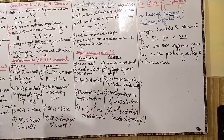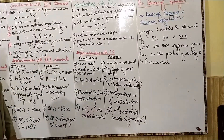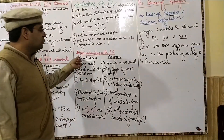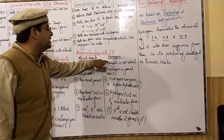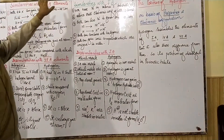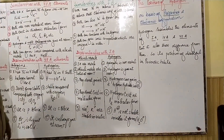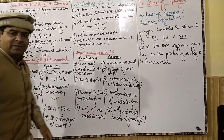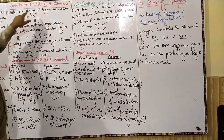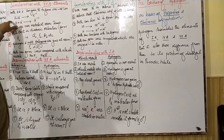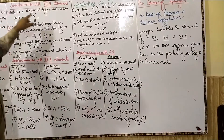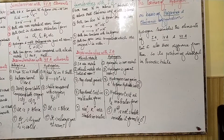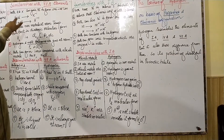Now we come to some similarities of hydrogen with Group 7A (halogens). The dissimilarities of hydrogen from 1A are almost the similarities with 7A. Both hydrogen and halogens can gain one electron — halogens like Cl can gain an electron to form Cl⁻, and hydrogen can also gain an electron. So both have the ability to form uninegative ions.